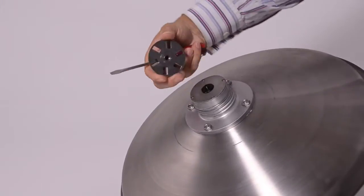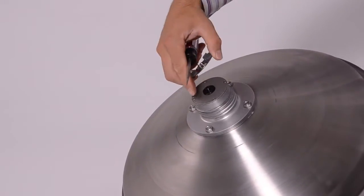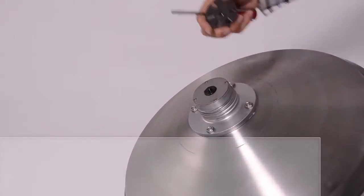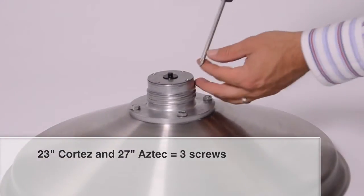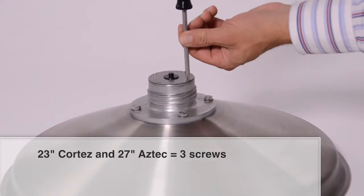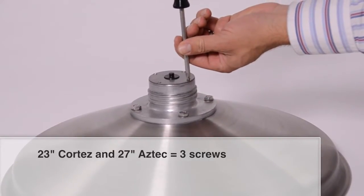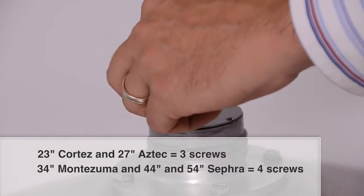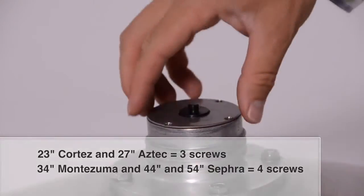Once the metal driver has been removed, we will be removing the bottom plate by unscrewing three or four Phillips head screws. Sephra's 23-inch Cortez and 27-inch Aztec have three screws. The 34-inch Montezuma, 44- and 54-inch Sephra have four screws to remove.